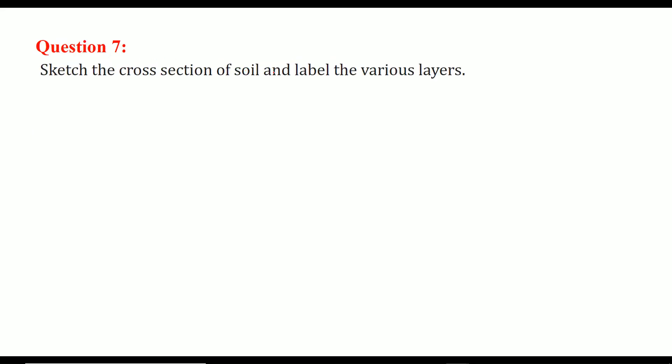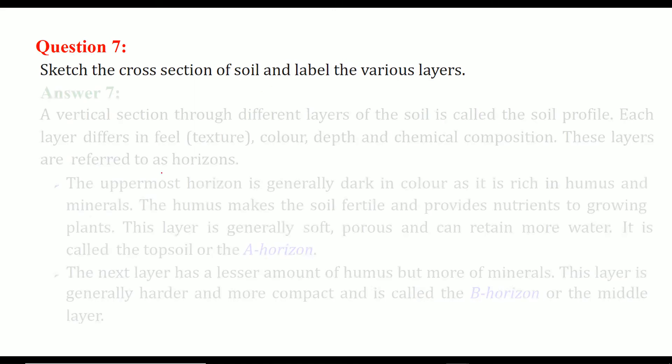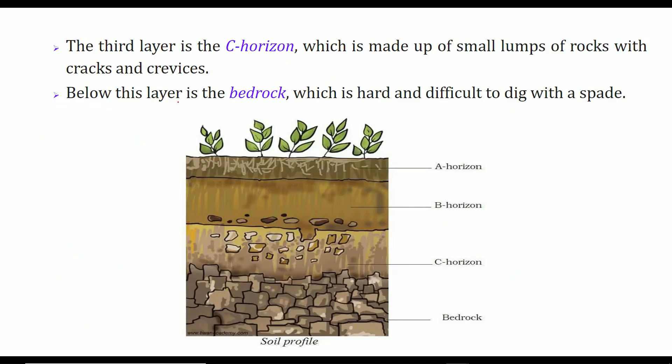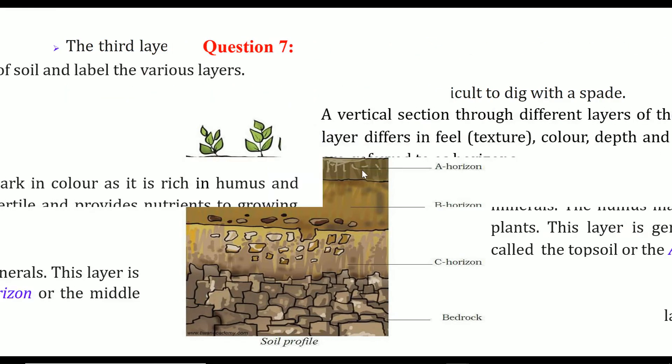Sketch the cross section of soil and label the various layers. So let me show you first. This is the first layer which is A horizon, this is B and this is C and this is D. So what happens here is this is very tough with rock and this is not very tough but it has humus etc. So we will take one by one.